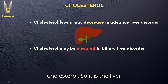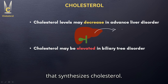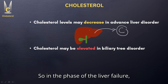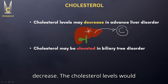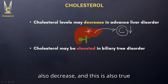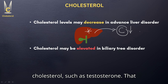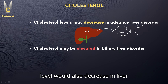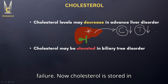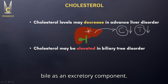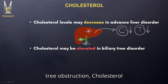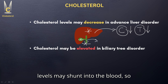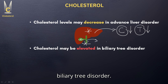Cholesterol. It is the liver that synthesizes cholesterol. In liver failure, that synthetic process would halt or decrease, so cholesterol levels would also decrease. This is also true for hormones derived from cholesterol, such as testosterone — those levels would also decrease in liver failure. Cholesterol is stored in bile as an excretory component, and in the case of a biliary tree obstruction, cholesterol levels may shunt into the blood, so cholesterol levels may be elevated in biliary tree disorders.